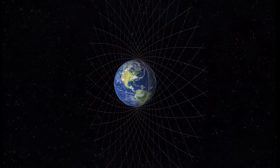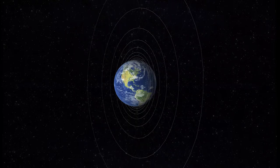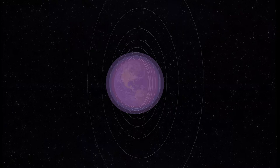The layers of compressed time form spherically around the planet, with the greatest compression at the surface and reducing compression as we move further away.